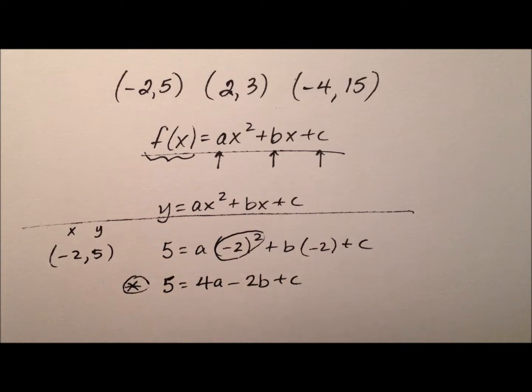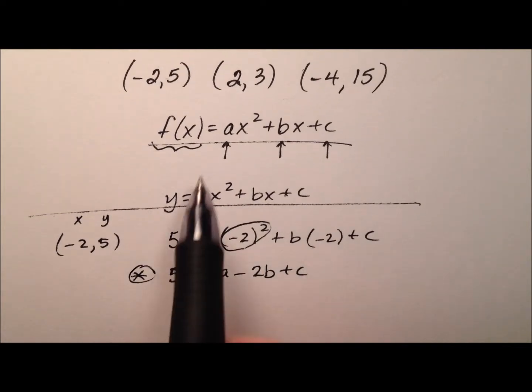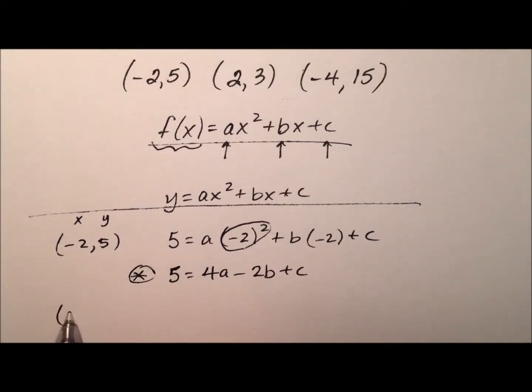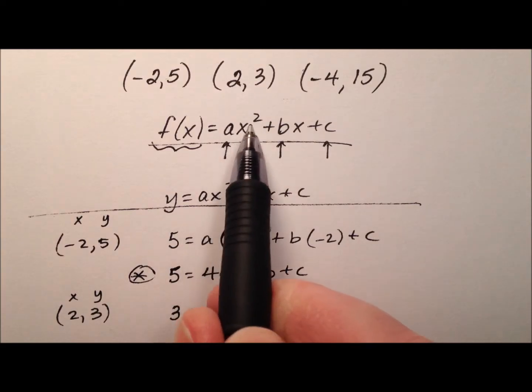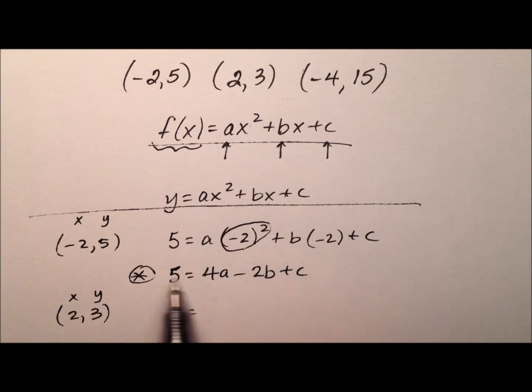I have a nice equation right here that I can use. Let's do the same thing for the other 2 ordered pairs. I have my x and my y, so I'll have my y, which is 3, equals, we're going to square the x, so 2 times 2 is 4a, and then plus bx, so plus 2b plus c.